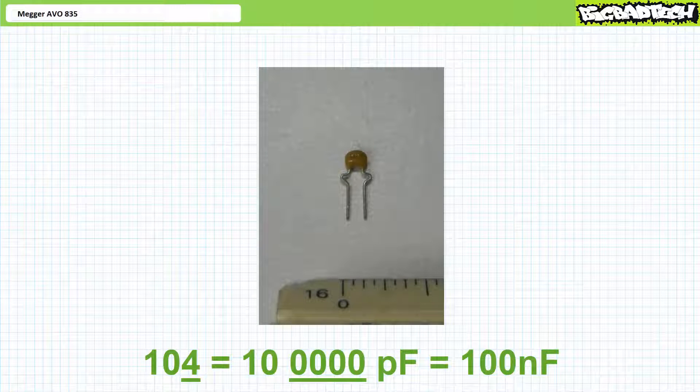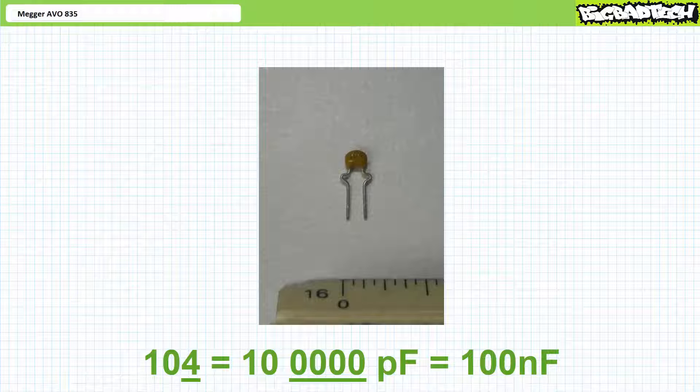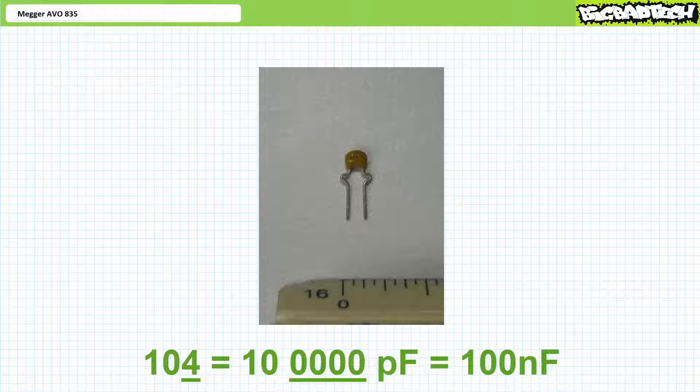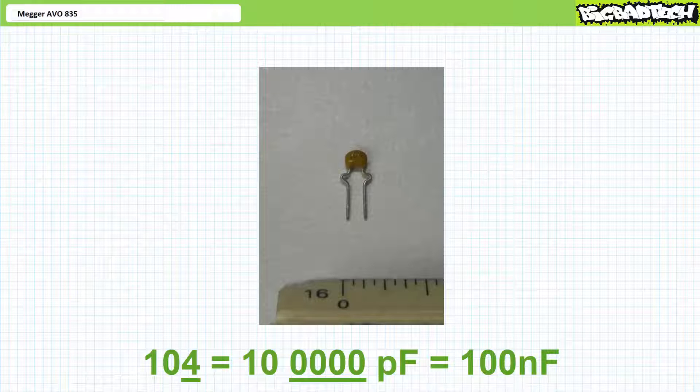Consider the small capacitor with code 104 written on the side. Given the small physical size of this particular capacitor, most likely this manufacturer is using a three-digit code, where the first two digits are the first two digits of the capacitance value, and the third digit is the number of zeros when capacitance is expressed in units of picofarads. 104 means one zero, followed by four zeros, or 100,000 picofarads, or more appropriately, 100 nanofarads,